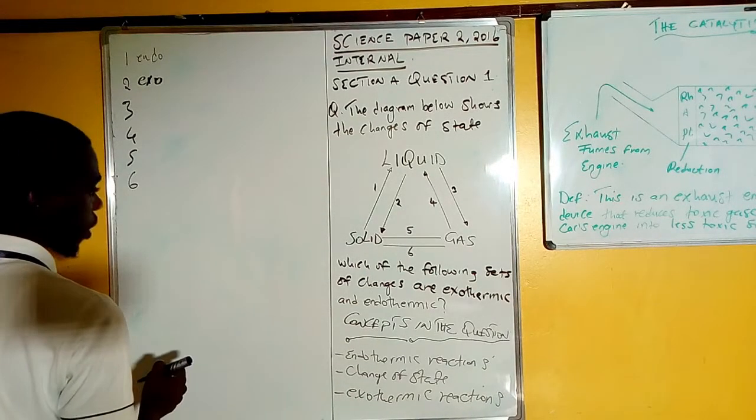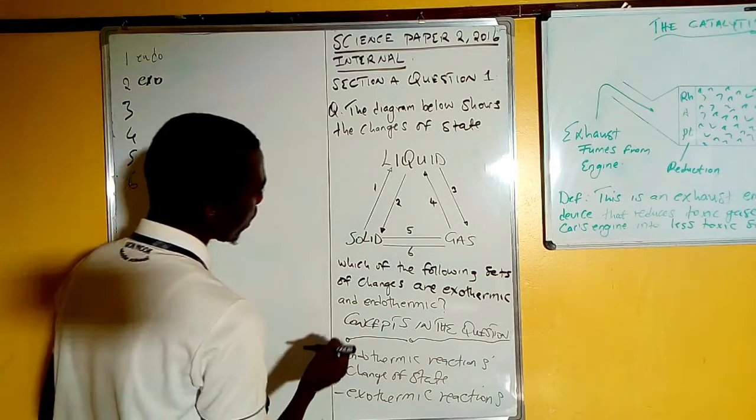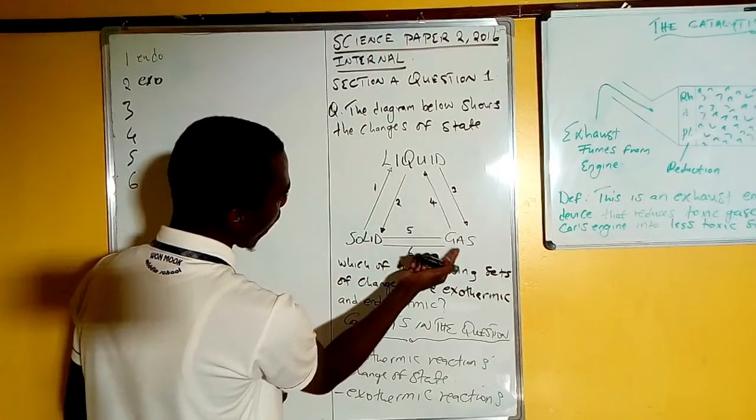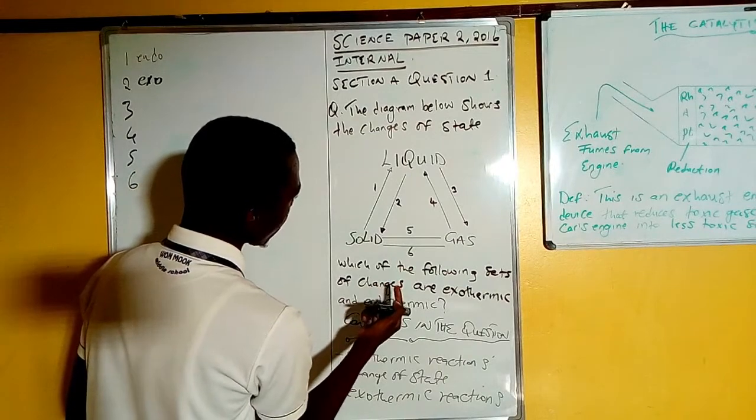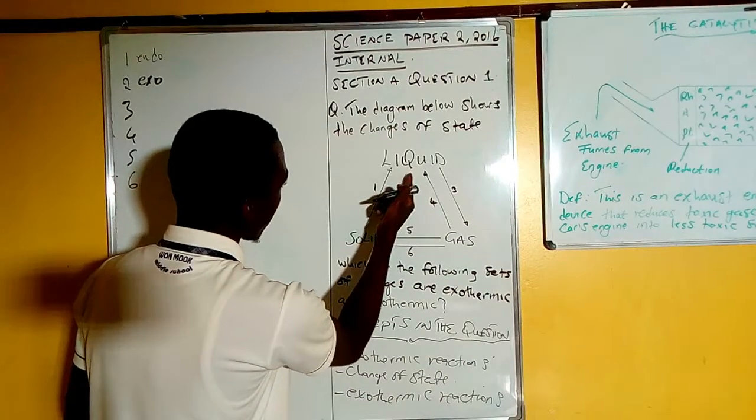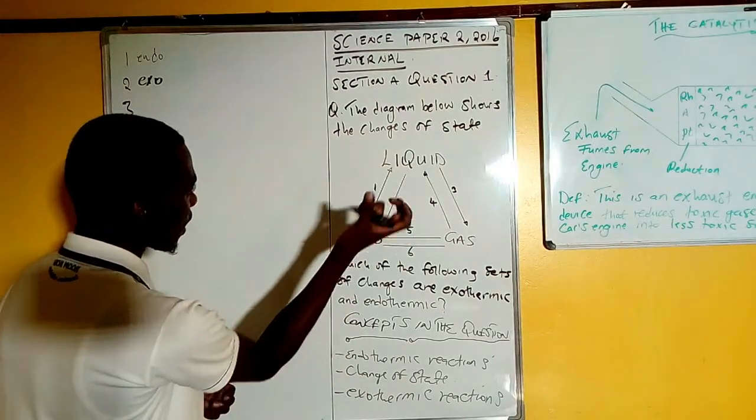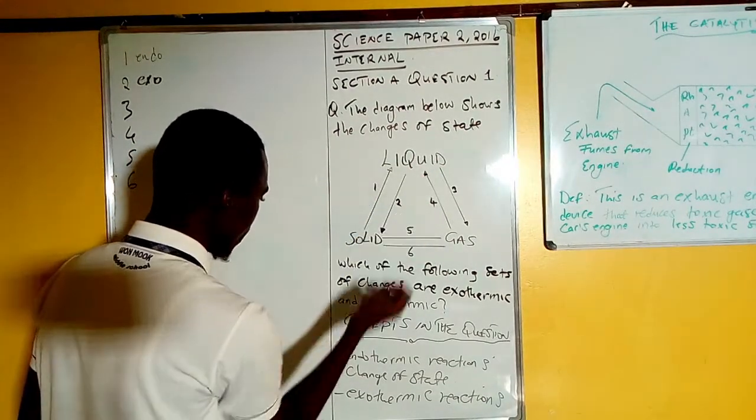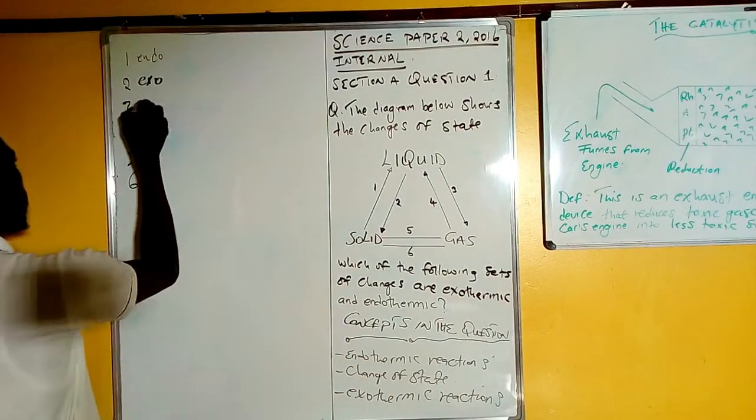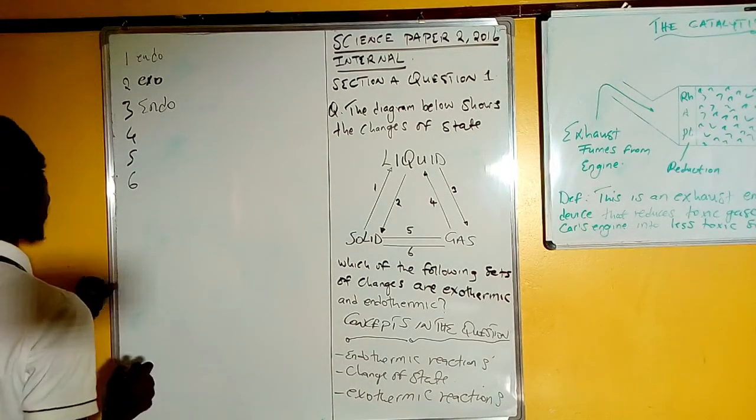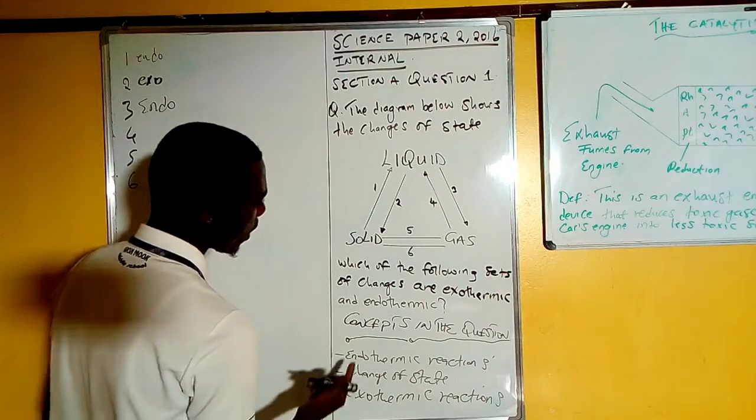How about number three? Number three is liquid to gas, which is evaporation. So meaning heat was being added, so the liquid now here is actually taking in the heat. So taking in heat, that is endothermic. We have an endothermic reaction.